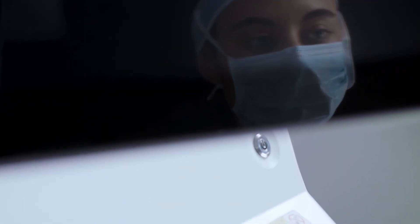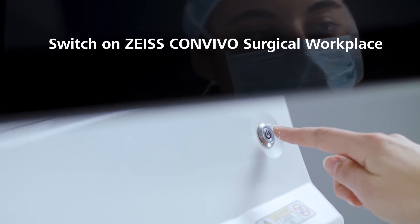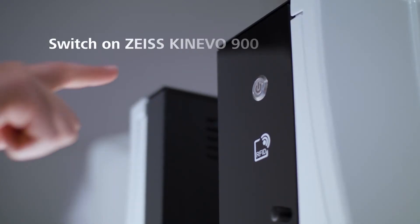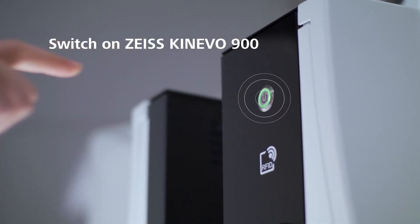When starting both systems, first switch on the Zeiss Convivo Surgical Workplace and then switch on the Zeiss Knievo 900.